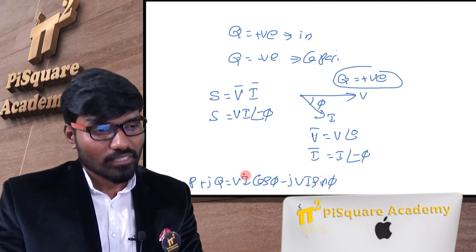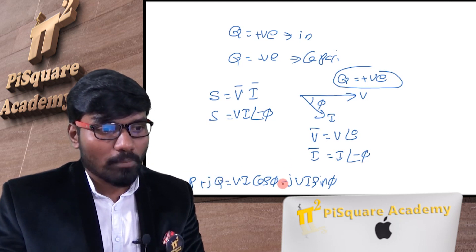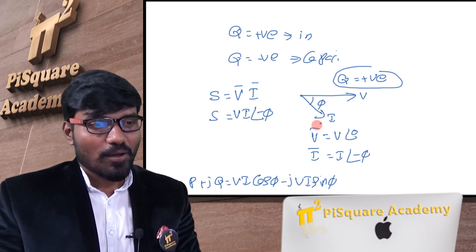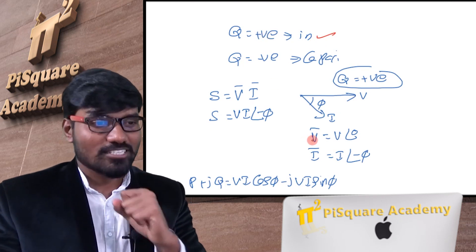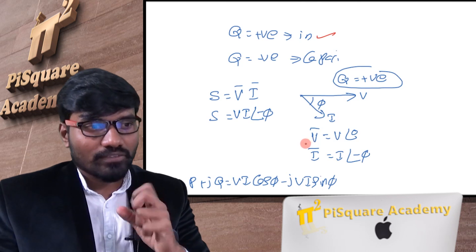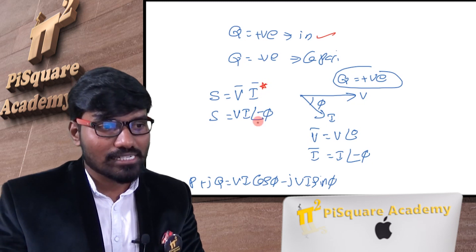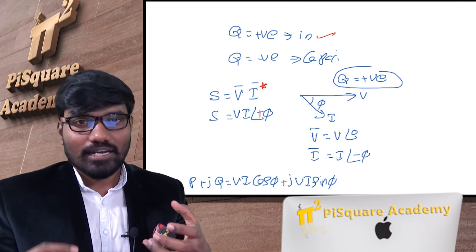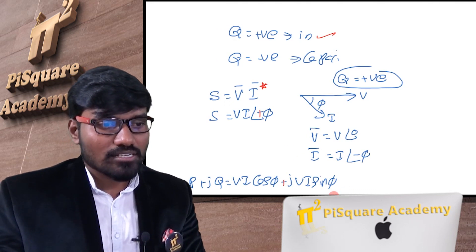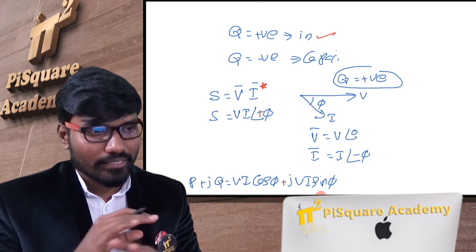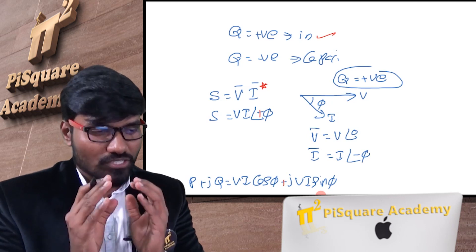But this is a lagging (RL) load with an inductor, so Q must be positive as per the convention. We are getting minus, but we should get plus. That's what the textbook says: to match the convention, if we take the conjugate of the current, the sign becomes positive — now there is a match. So this is the answer given by textbooks and most electrical engineers, but this is not the complete answer.